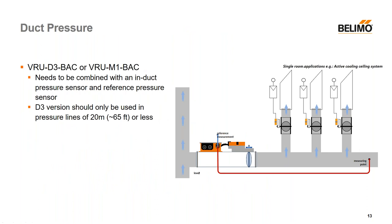Another application is duct pressure. For this we recommend either the VRU-D3-VAC or VRU-M1-VAC. You need to combine it with an induct pressure sensor and a reference pressure sensor. One important thing to be careful about is making sure that reference pressure sensor is in an area where there won't be any pressure fluctuations — if you don't, those pressure fluctuations will be transposed into your system. If you put it in a room where somebody is constantly opening and closing doors, that's going to impact what's happening in your duct, so you really want a good location for it.